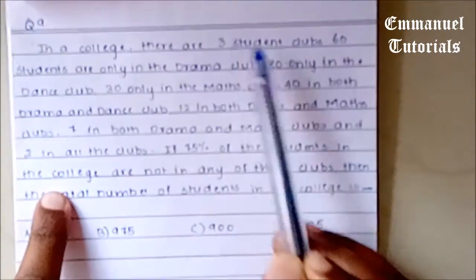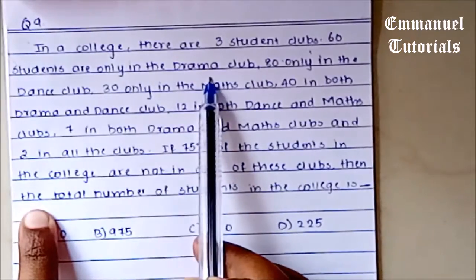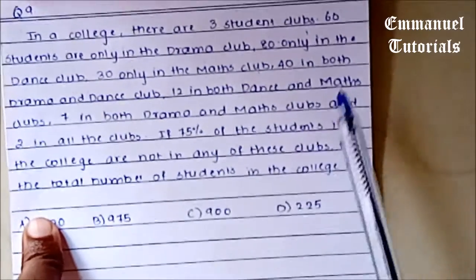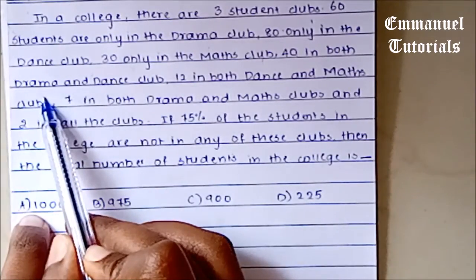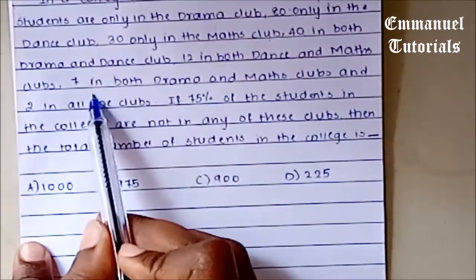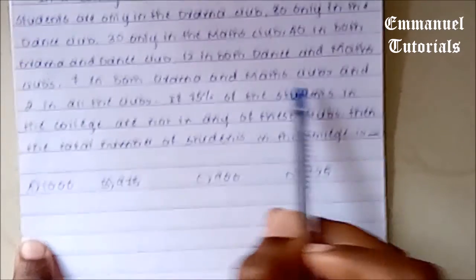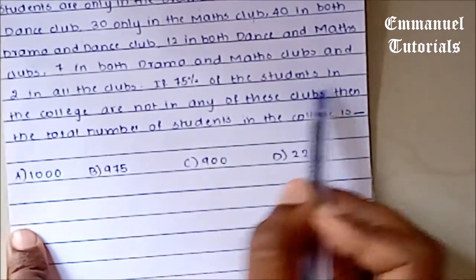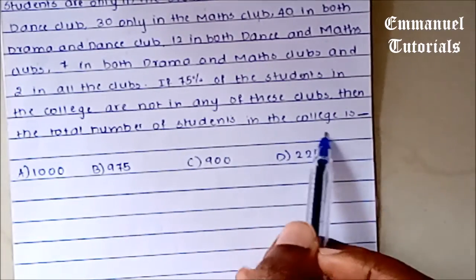The question says: In a college, there are 3 student clubs. 60 students are only in the drama club, 80 only in the dance club, and 30 only in the maths club. 40 of the students are in both the drama and the dance club, 12 are in both the dance and the maths club, and 7 in both drama and the maths clubs. And 2 of them are in all of the clubs. If 75% of the students in the college are not in any of these clubs, then the total number of students in the college is?